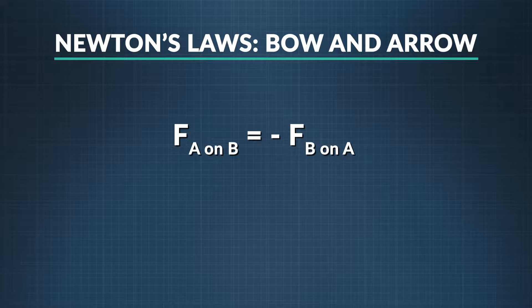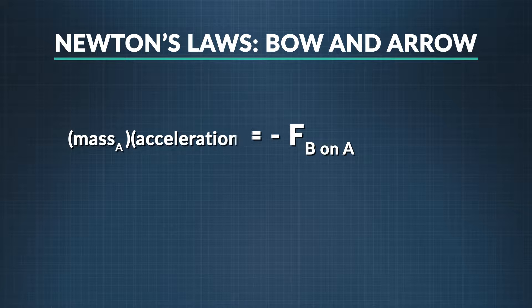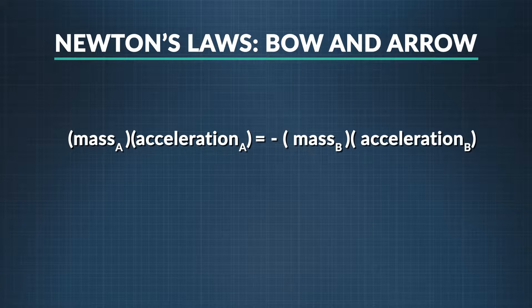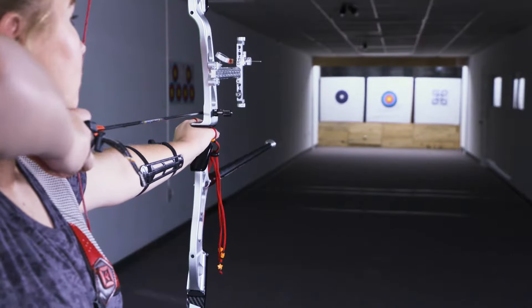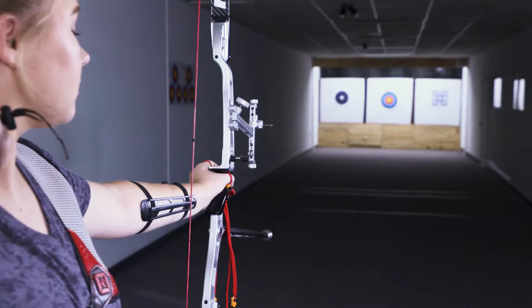We know from Newton's second law that force equals mass times acceleration. We can now see that when we substitute the second law equation into the third law, we can analyze our forces acting in more detail. This may be hard to believe because it doesn't appear equal at all in this case — the bow seemed to stand still while the arrow flew into the air, but why? It's all about the mass of the bow versus the mass of the arrow.